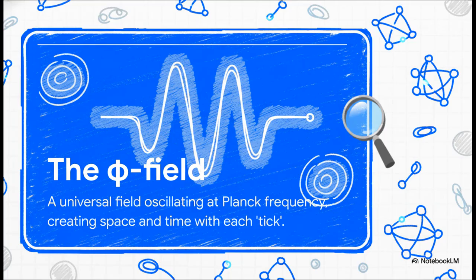Okay, so if there's no zero, what's powering this whole shebang? The theory introduces something called the Phi field. The best way to think about it is like a cosmic heartbeat. It's this single universal field that's constantly oscillating incredibly fast. And with every single tick of this heartbeat, it creates a tiny new piece of space and pushes time forward. It's the fundamental rhythm that everything – space, time, matter – is built on.